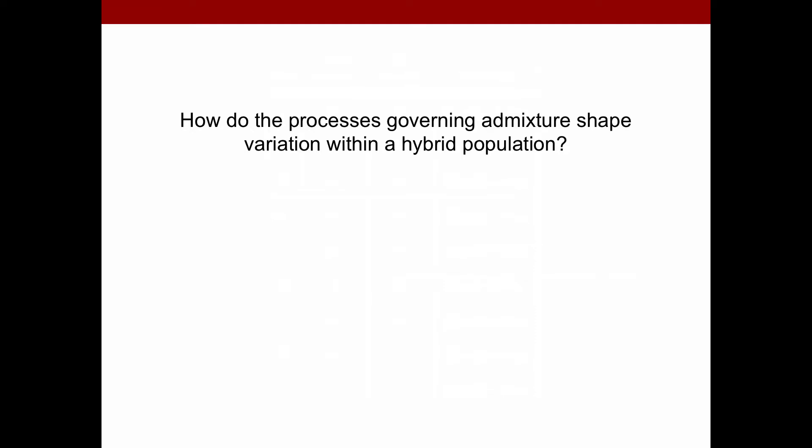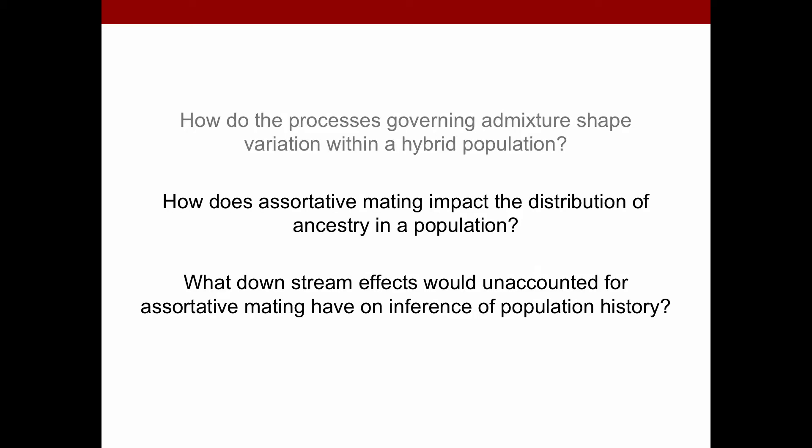So we return to our initial question of how these processes that govern admixture shape a hybrid population. Under this model, we can make them a little more concrete. How does assortative mating impact the distribution of ancestry within a population? And a little more specifically, what downstream effects would unaccounted for assortative mating have on inference of population history? Because this distribution of ancestry in a population is often used to infer parameters of migration and the timing of admixture.